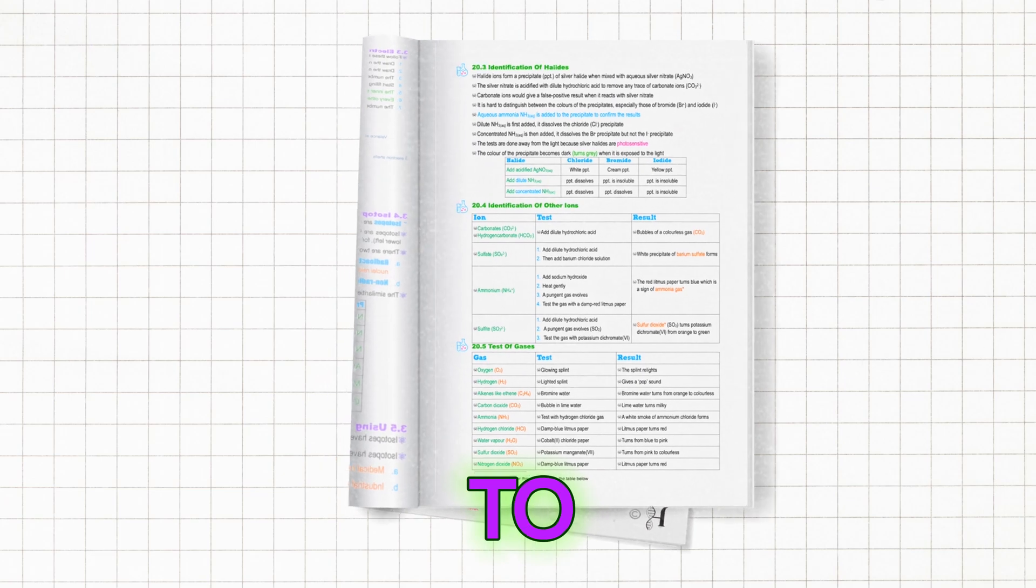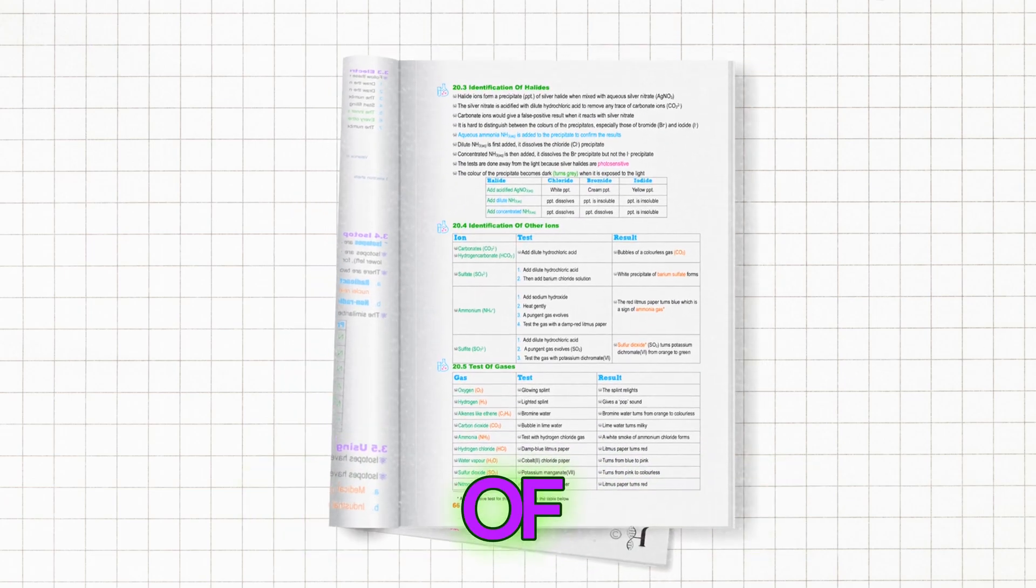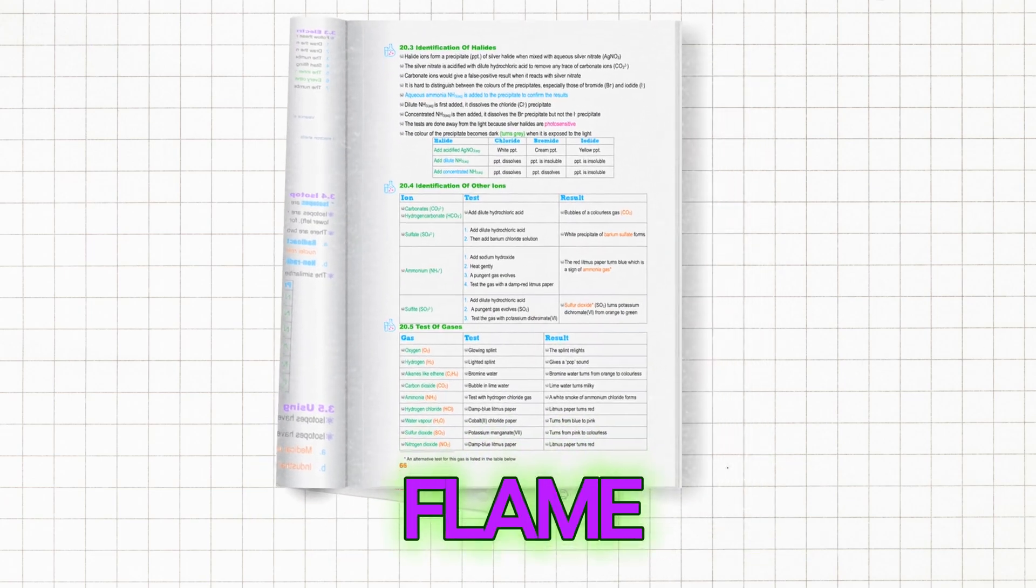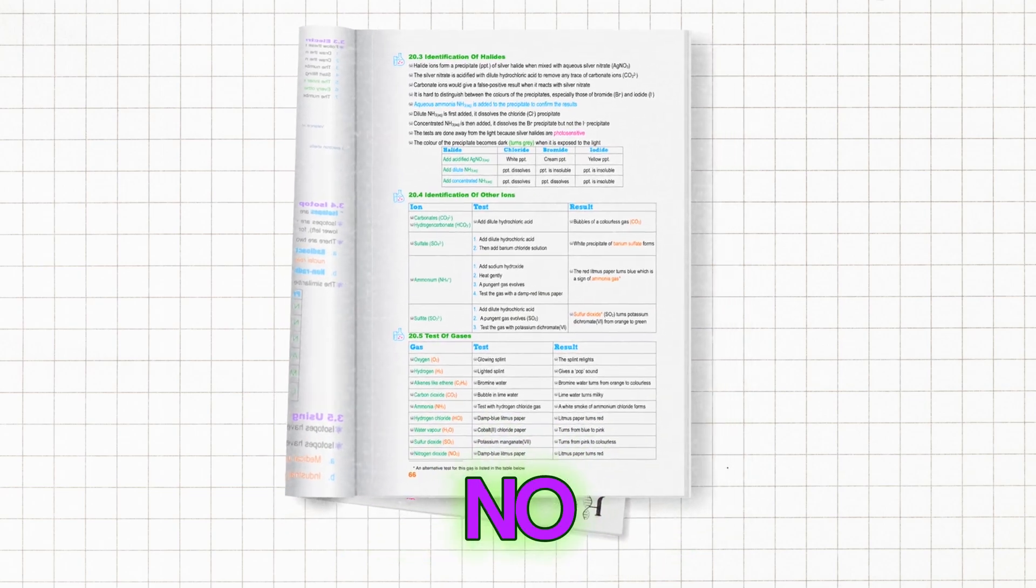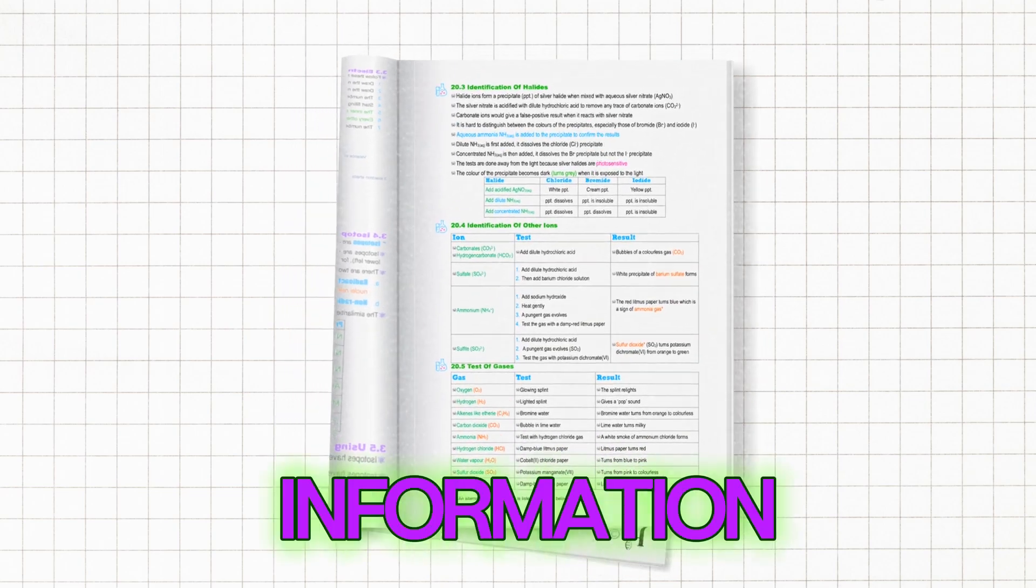One more practical tip is to learn the identification of ions and gases and the flame colors since there will be no data sheet provided with these information.